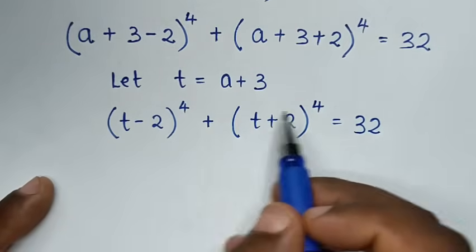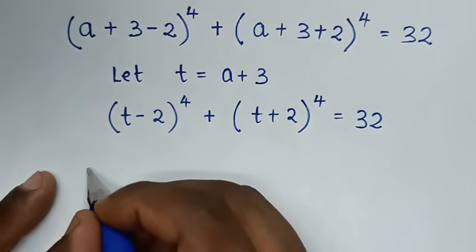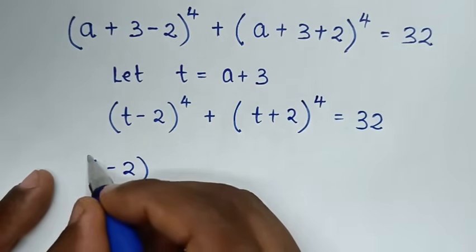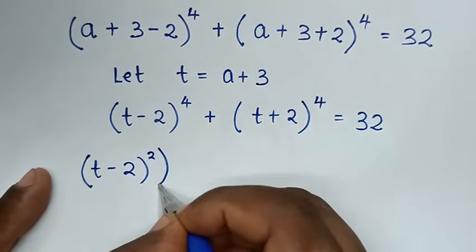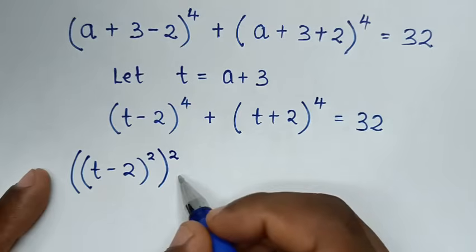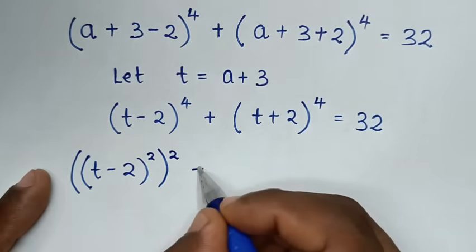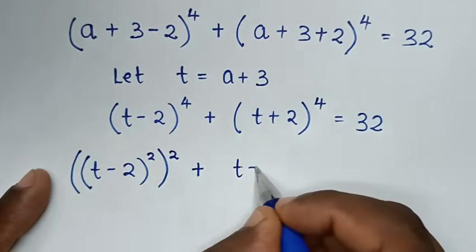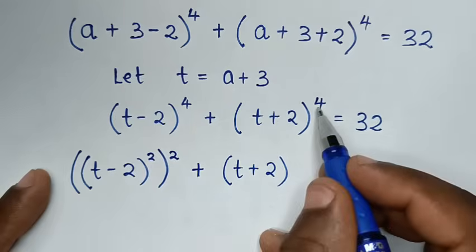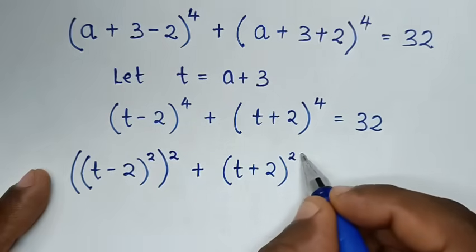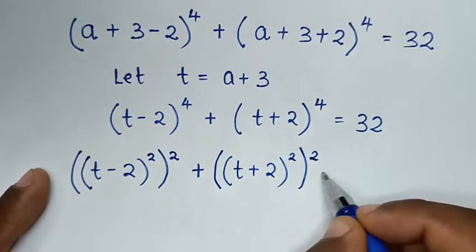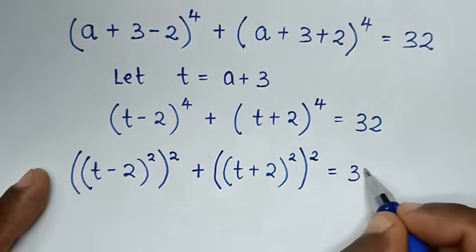We convert the 4th powers into squares of squares. So (t − 2)⁴ = ((t − 2)²)² and (t + 2)⁴ = ((t + 2)²)², giving ((t − 2)²)² + ((t + 2)²)² = 32.